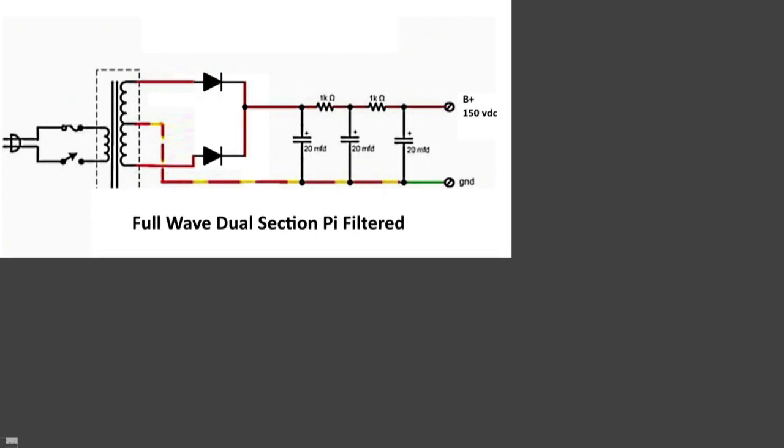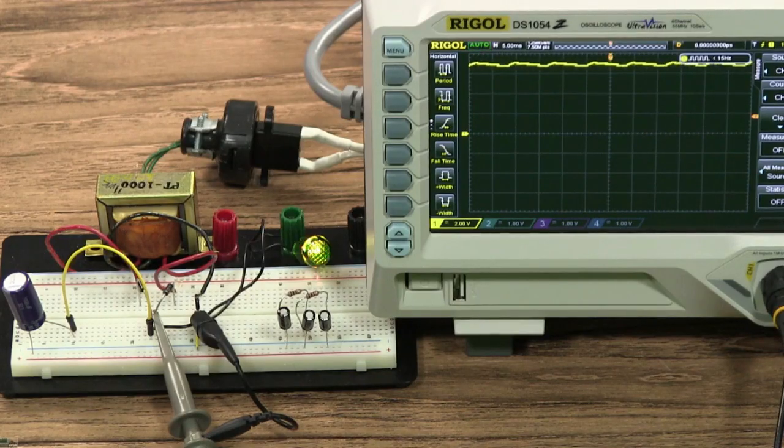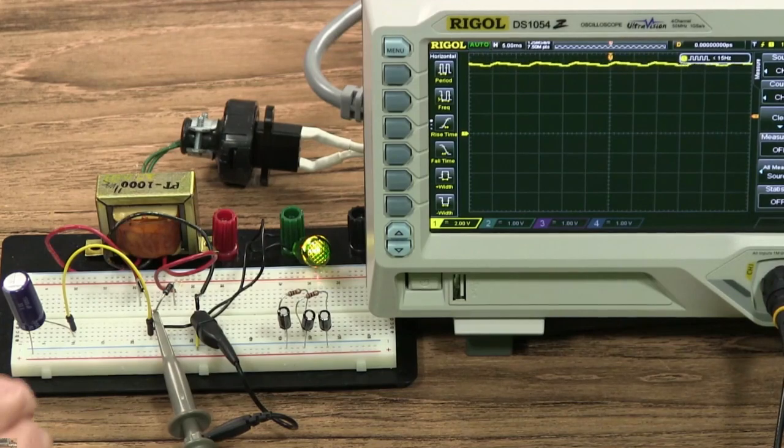Well, there's a couple of reasons. One reason is it's really not that cheap to buy a 1,000 microfarad capacitor that can withstand the 150 volts that Bob is talking about in the circuit. You can buy them. They get a little more expensive, especially when you get into higher voltages than that. But also, it really doesn't filter quite as well as just those little 20 microfarad capacitors in a properly constructed pi filter. So let's go back and look at that.